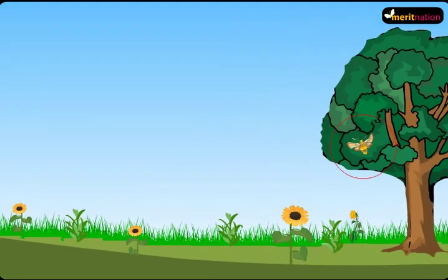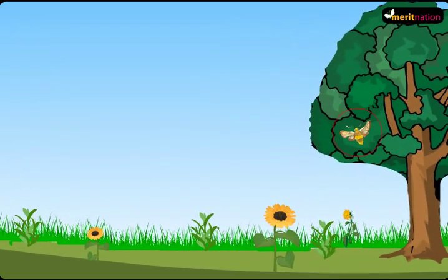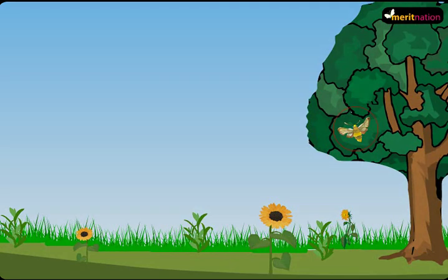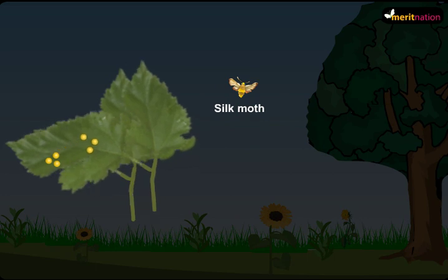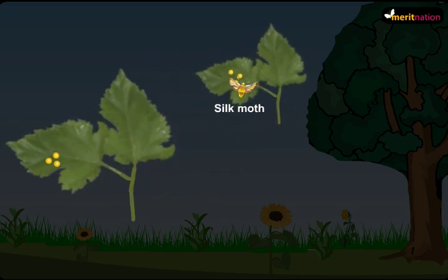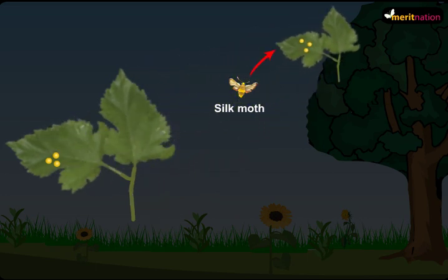I'm sure you all know about silkworms. The life of a silkworm starts when a female moth lays eggs on mulberry leaves. After some time, these eggs hatch into larvae.